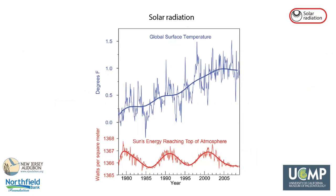Slight fluctuations in the amount of energy released by the sun have been measured for more than 40 years. These fluctuations include increases and decreases that occur approximately every 9 to 11 years, shown by the red line on the bottom of the graph, which correlate with the number of sunspots on the surface of the sun. However, this pattern of solar output does not match the overall increase in global average temperatures observed over the same time period, which is the blue line in the top graph, leading to the conclusion that change in solar radiation is not a cause of the Earth's rising average temperature.